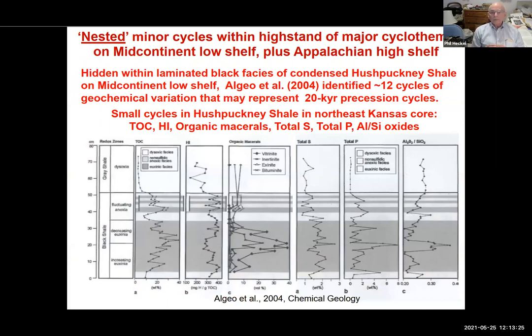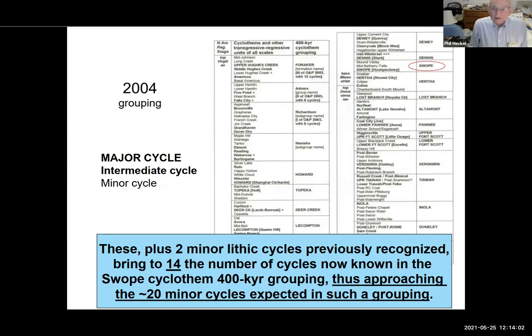Geochemical studies by Algeo et al. at the Hushpukni at one locality find small geochemical cycles hidden in the Hushpukni shale — roughly 12 of them based on TOC, hydrogen index, organic mass ratios, total sulfur, total phosphate, and aluminum-silicon oxides. These 12 plus two minor lithic cycles previously recognized bring to 14 the number of cycles known in the slope cycle then 400,000-year grouping, approaching the 20 minor cycles expected in such a group.